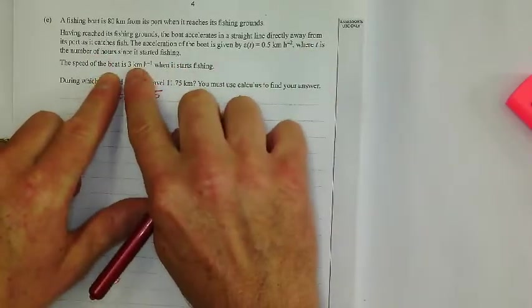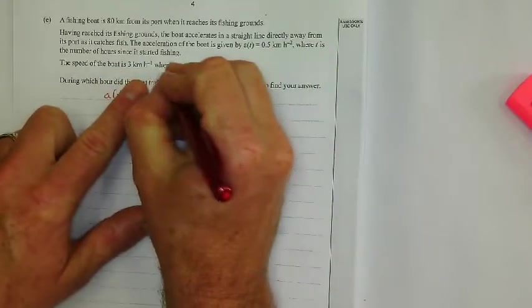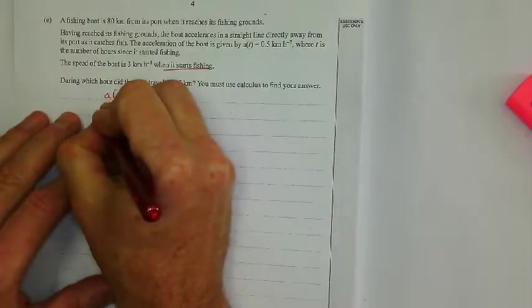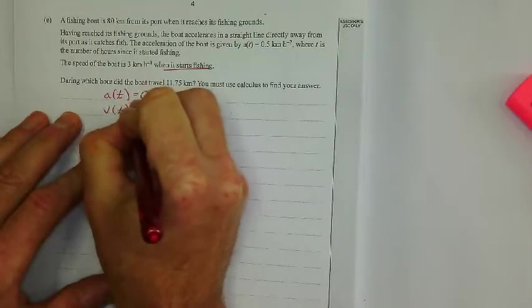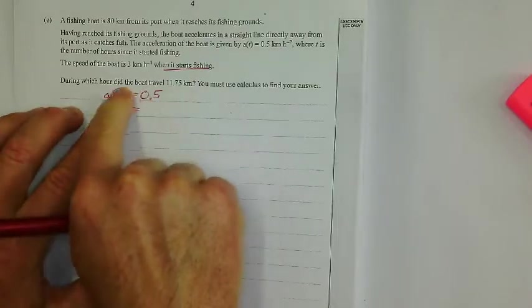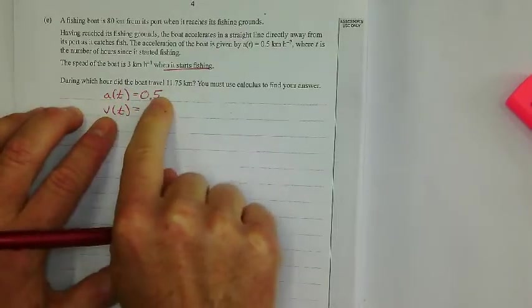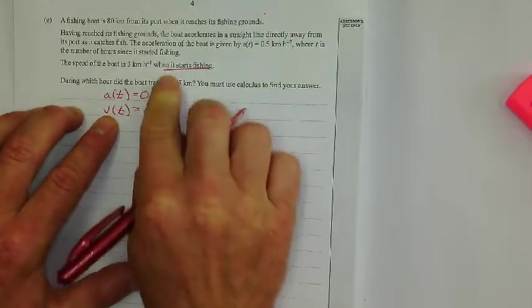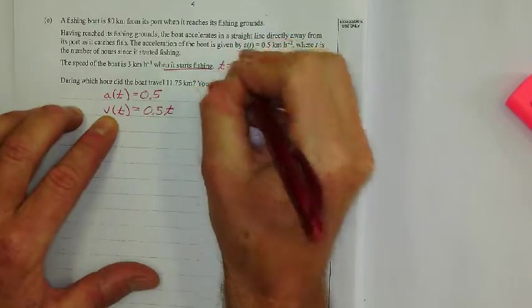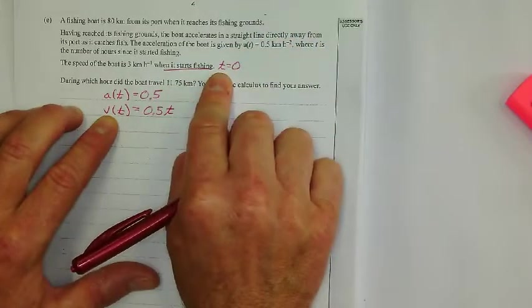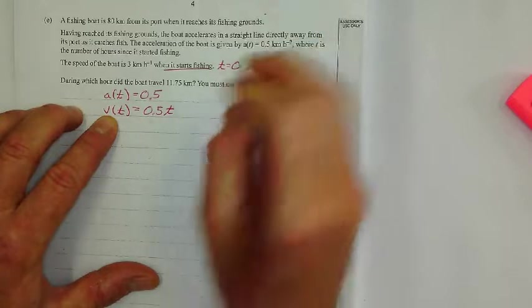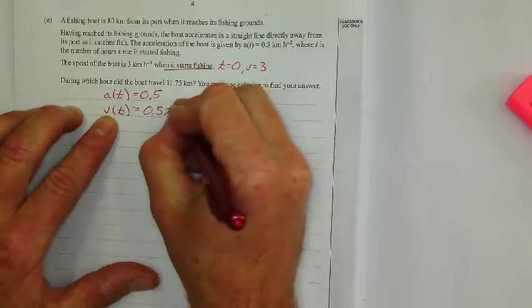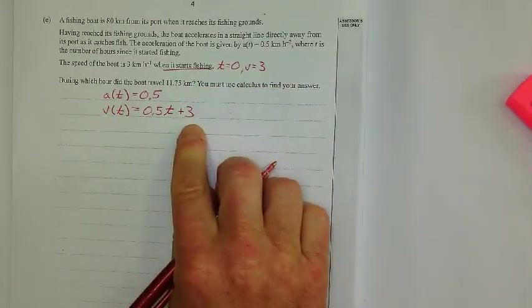The speed of the boat is, here's the velocity, when it starts fishing. All right. So what that means is I'm going to talk about the velocity here. Now the velocity is when I anti-differentiate the acceleration. So this is going to be 0.5t. Now when it starts fishing, when t equals 0, that's what they're talking about there. When t equals 0, the velocity is 3. So when t equals 0, the velocity is 3. It means I have that plus 3 at the end.